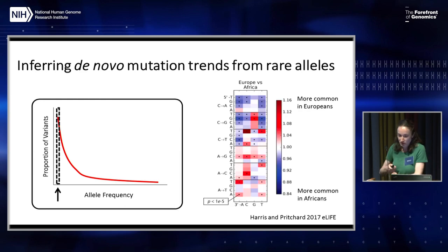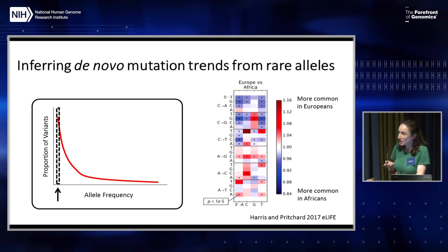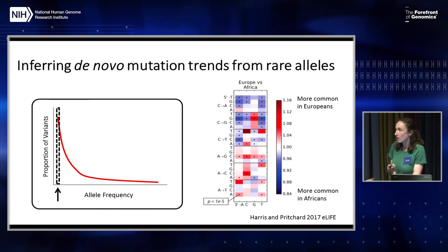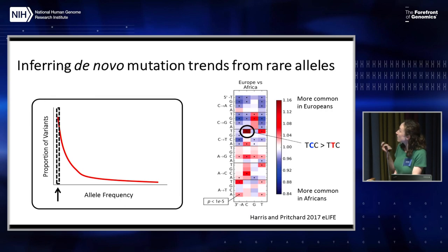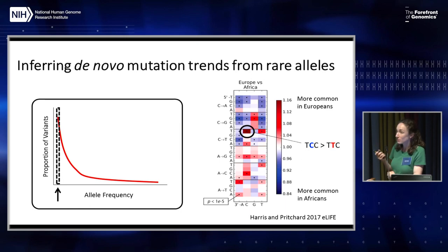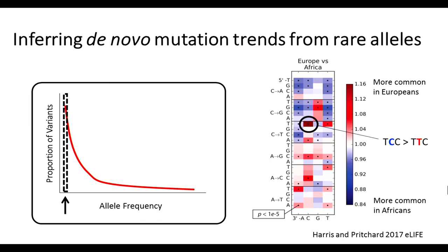Some recent work from Kelly Harris used rare population-private variants to infer differences in the mutation spectrum. What Kelly found is that the relative frequency of different mutational types — shown here as a heat map broken down by 5' and 3' flanking nucleotides — is quite variable across human populations. For example, C-to-T mutations in a particular triplet nucleotide context are much more enriched in Europeans than in Africans. Whether this variation reflects differences in environmental exposures to mutagens, differences in life history traits, or genetic modifiers segregating between populations is really difficult to tease apart in humans, where we can't rigorously control for the effects of environment.